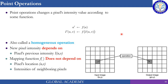The previous lecture was about histogram analysis. Now we start image processing and point pixel operations, which is the most widely used technique in image processing. Within one or two lectures we will be using point pixel operations with histogram information. A point pixel operation changes the pixel intensity value according to some function — also called a homogeneous operation. The new pixel intensity depends only on the pixel's previous intensity; the mapping function does not depend on pixel location or the intensity of neighboring pixels.